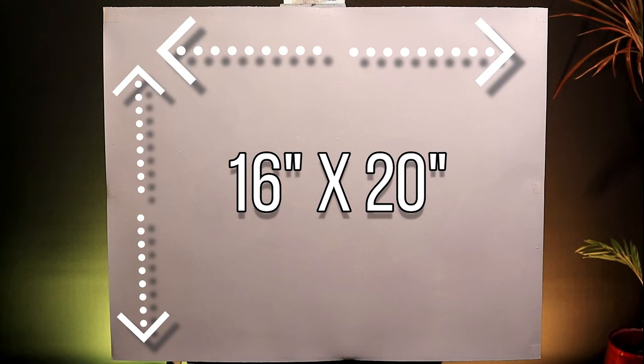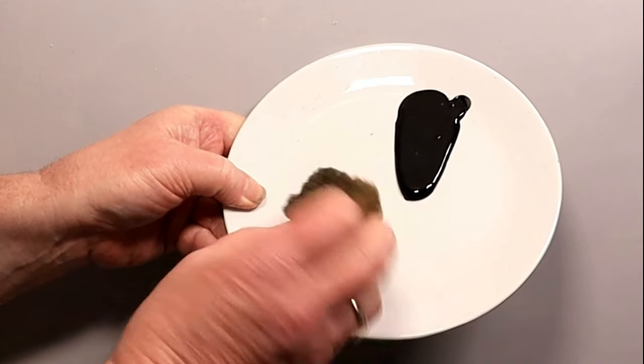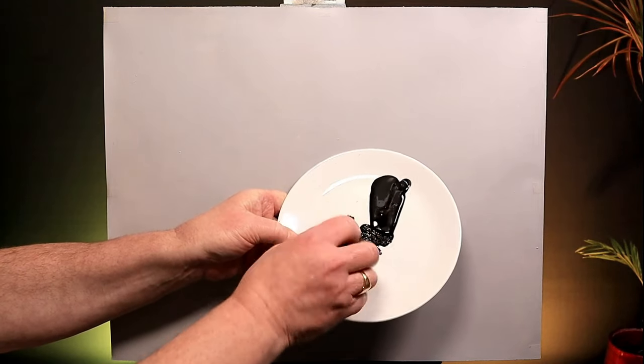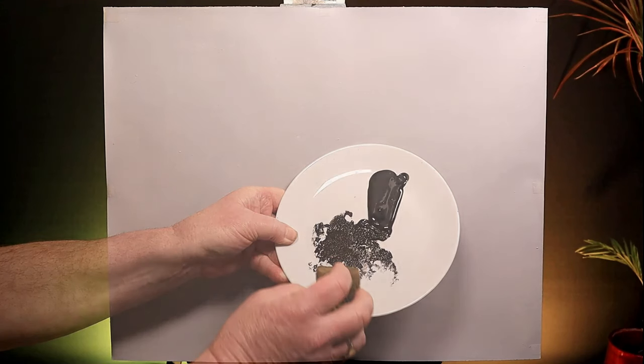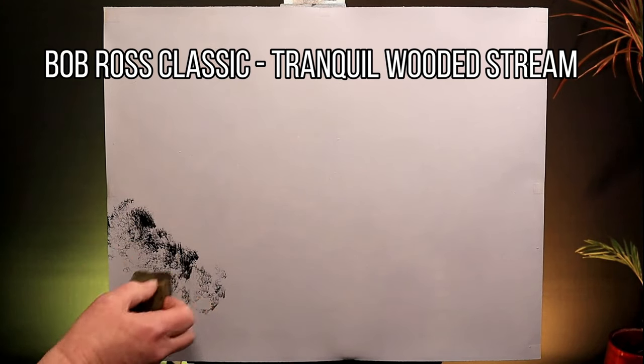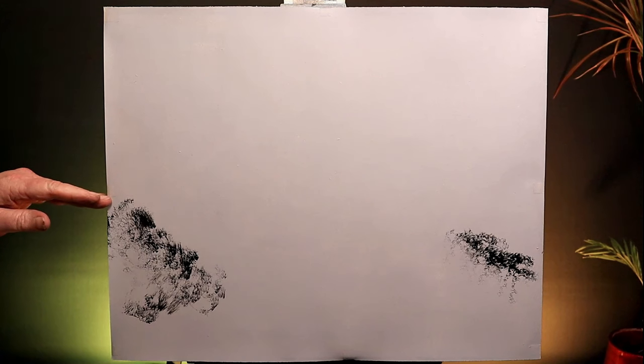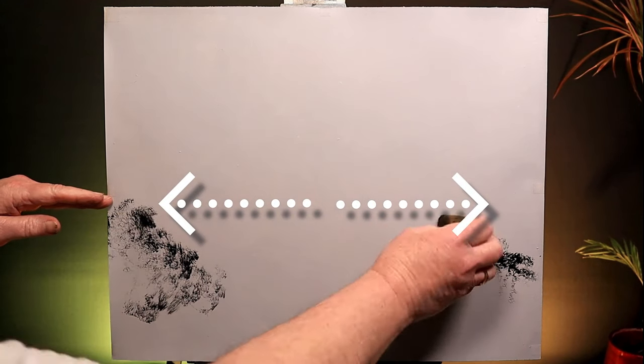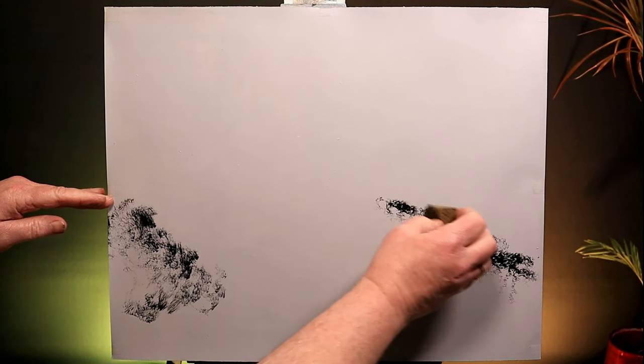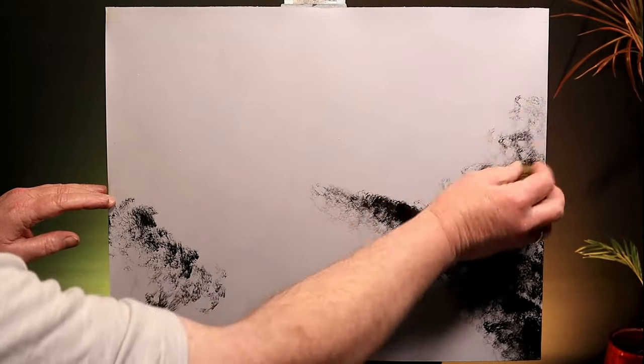So here's my canvas, 16 by 20 landscape, that's laid on its side. I'm going to start off with gesso. Black gesso and this, a piece of cellulose car sponge that I've doctored up. I take a pair of pliers to it and give it a bit of a nibbling, like a mouse. I want to start off by just laying out the position of a few elements of my painting. This is a Bob Ross classic, tranquil wooded stream. On the left hand side, I've got a bit of a riverbank, and another bit of riverbank on the opposite side, and this wants to be my horizon line, which is a little lower than halfway down my canvas.